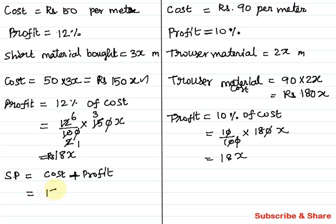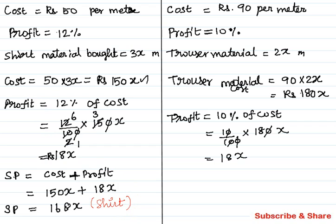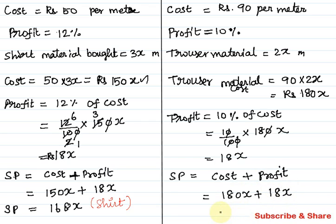Total selling price of shirt = cost plus profit = 150x plus 18x = 168x. This is the selling price of shirt material. For trouser material, cost plus profit = 180x plus 18x = 198x. This is the selling price of trouser material.